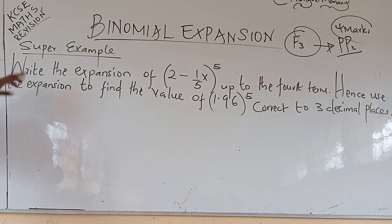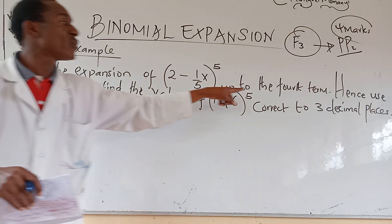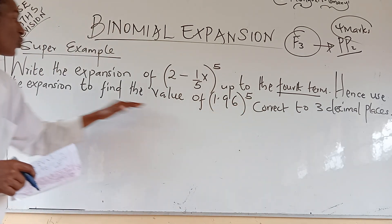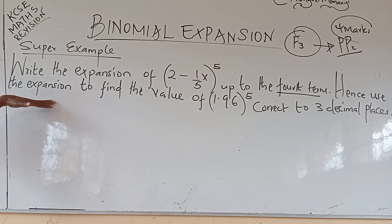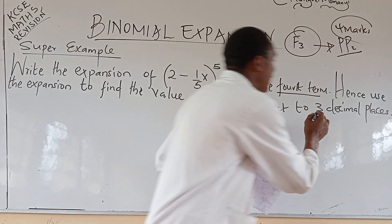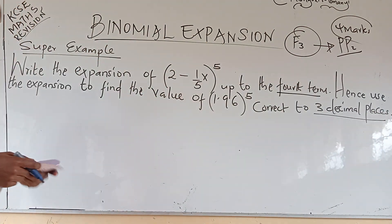In this one, we are taught the expansion of this up to the fourth term. You are underlining fourth term. First, use the expansion to find the value of this, correct again to three decimal places. Those are the key points.